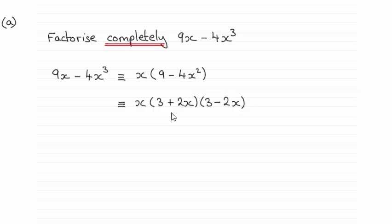So what you do when you're factorising anything is first of all look for a common factor, and of these two terms the common factor is x. So I've pulled out that common factor of x, leaving us with 9 minus 4x squared.